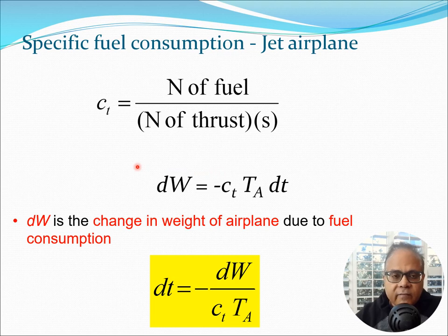One of the things we discussed before is the specific fuel consumption for a propeller-powered aircraft, and there we talked about C. Now in the case of jet we are going to talk about C subscript T. As far as jet engines are concerned they are rated in terms of thrust, therefore the CT is also expressed in terms of thrust. So CT is defined as Newton of fuel divided by Newton of thrust into seconds, and we can use this particular nomenclature to get the value for dW. So dW is essentially the amount of fuel which is being consumed or dissipated, and this is equal to CT into TA into dt.